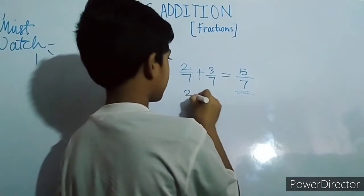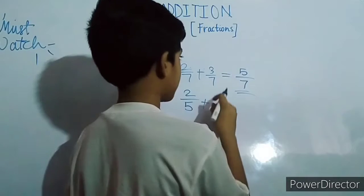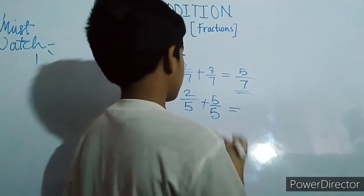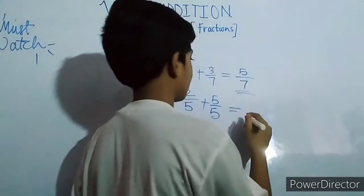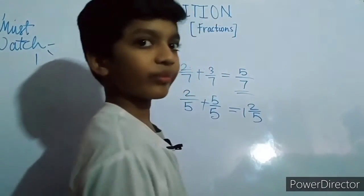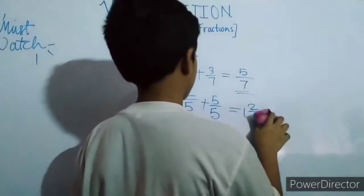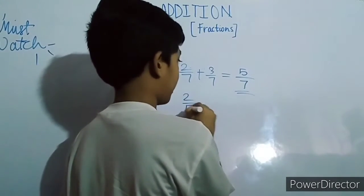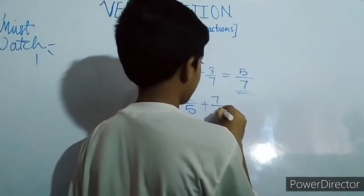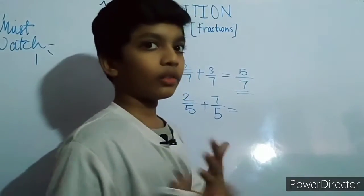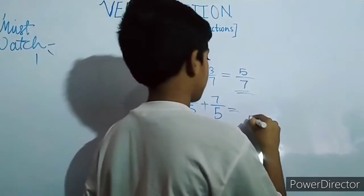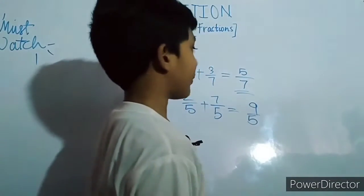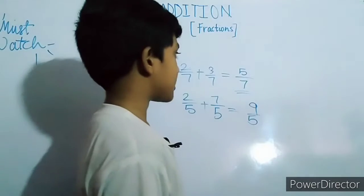Next example: two by five plus five by five. You get one two by five. Let's take another example: two by five plus seven by five. No changes in the process — same denominator but the numerators are different. Two plus seven is nine, so nine by five is the answer.